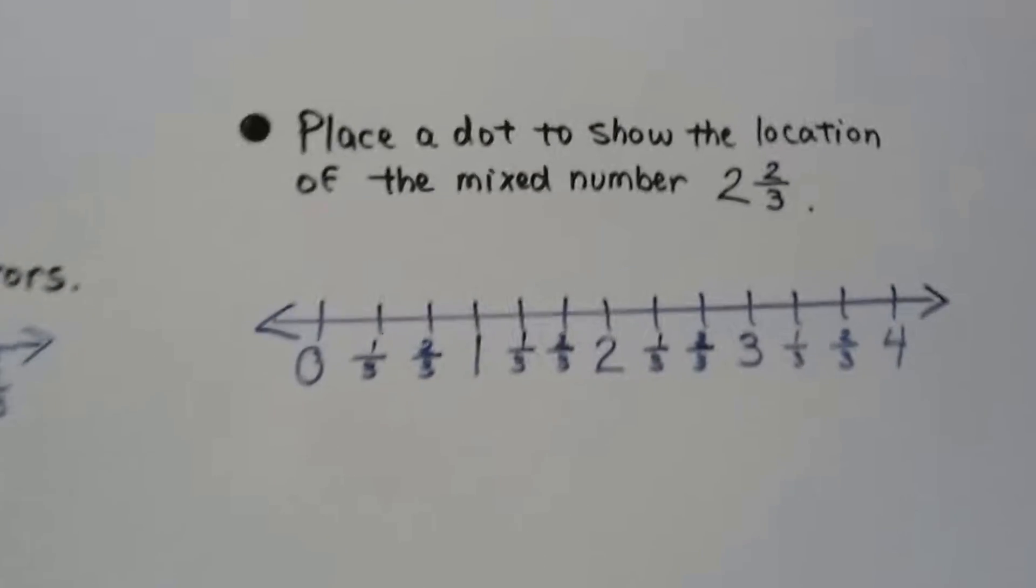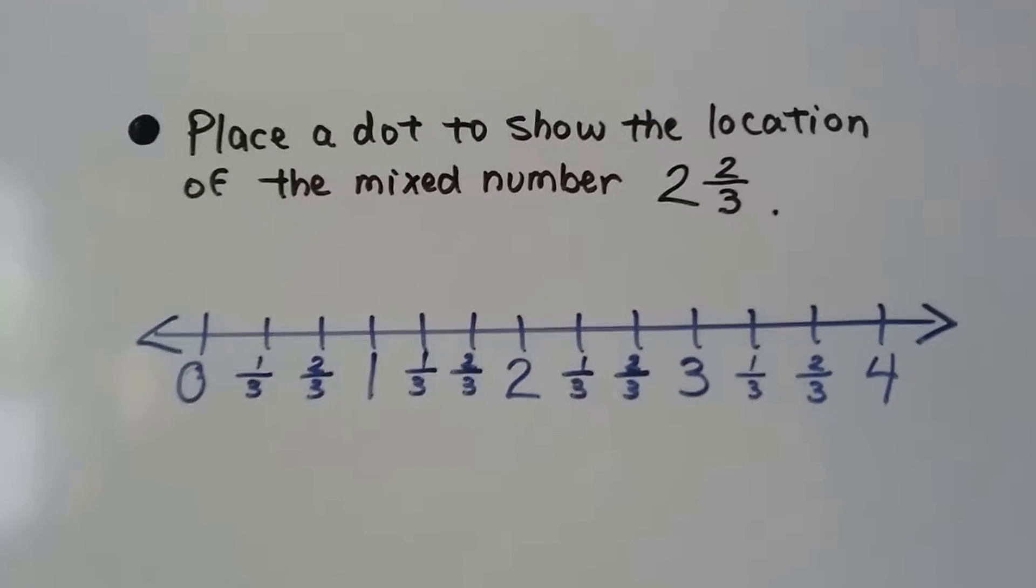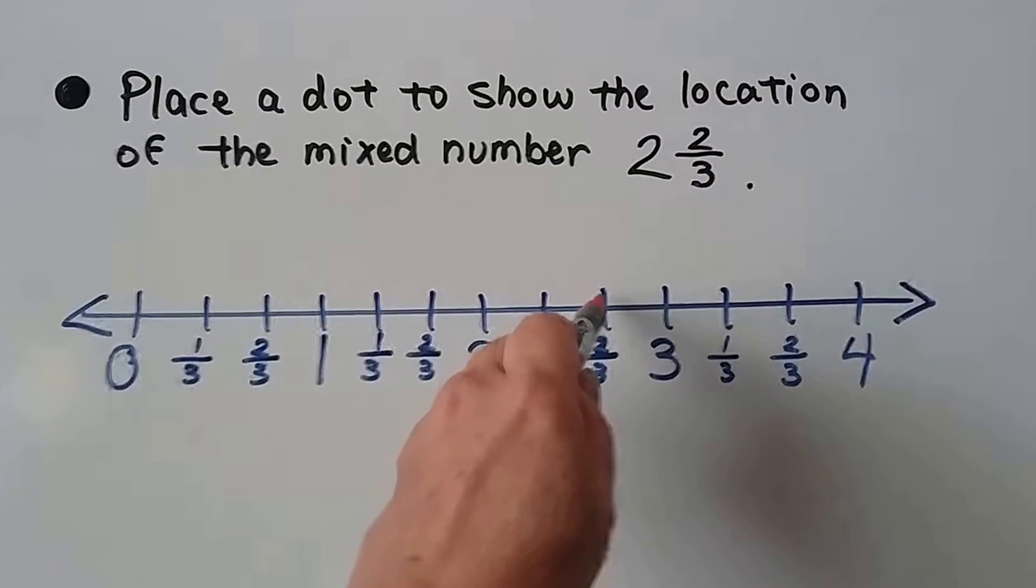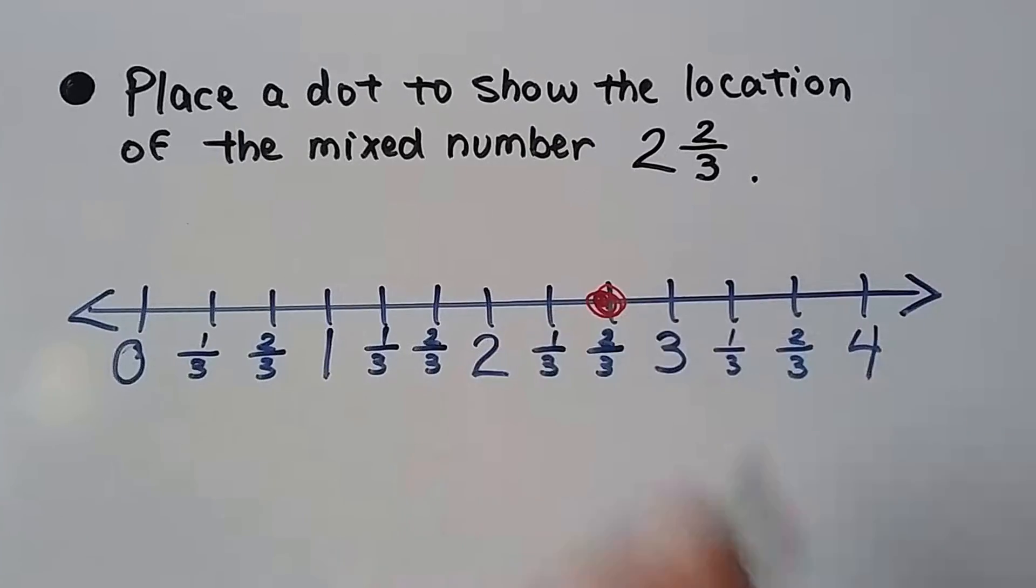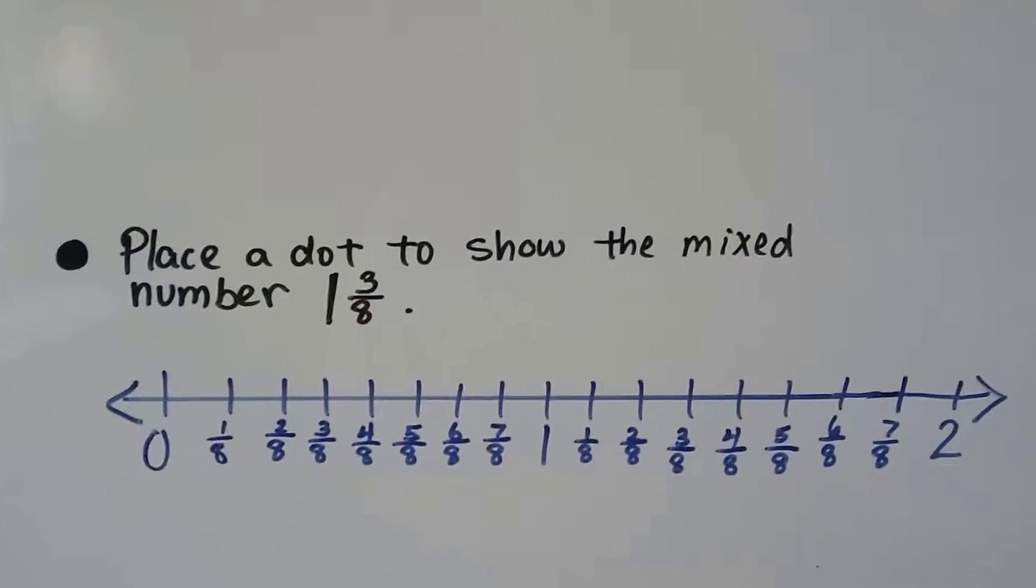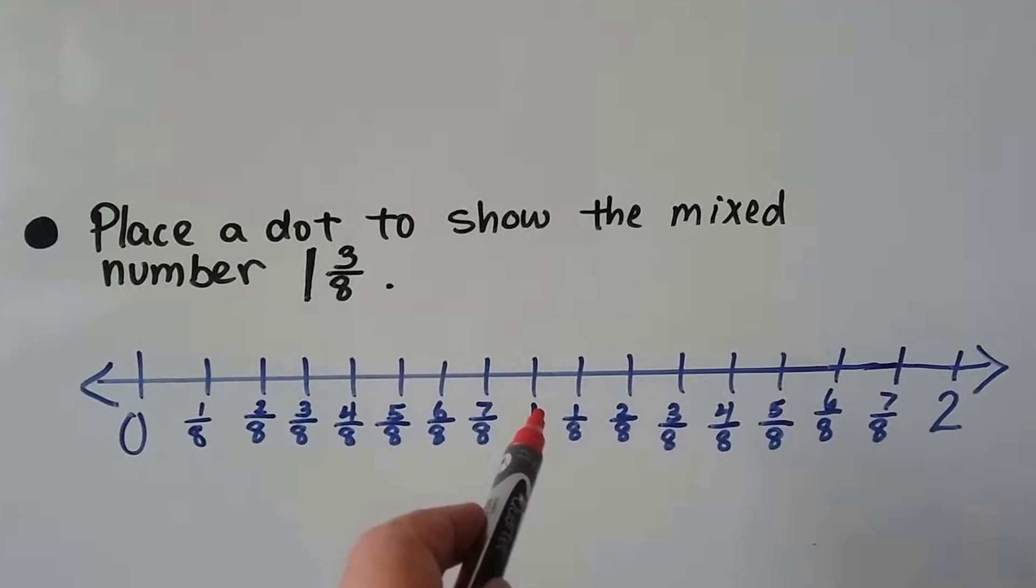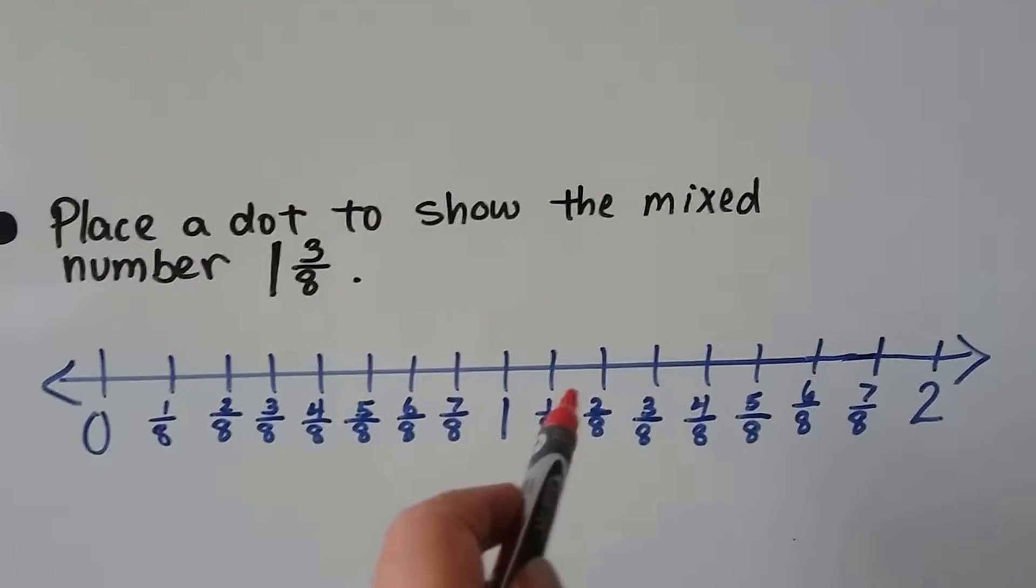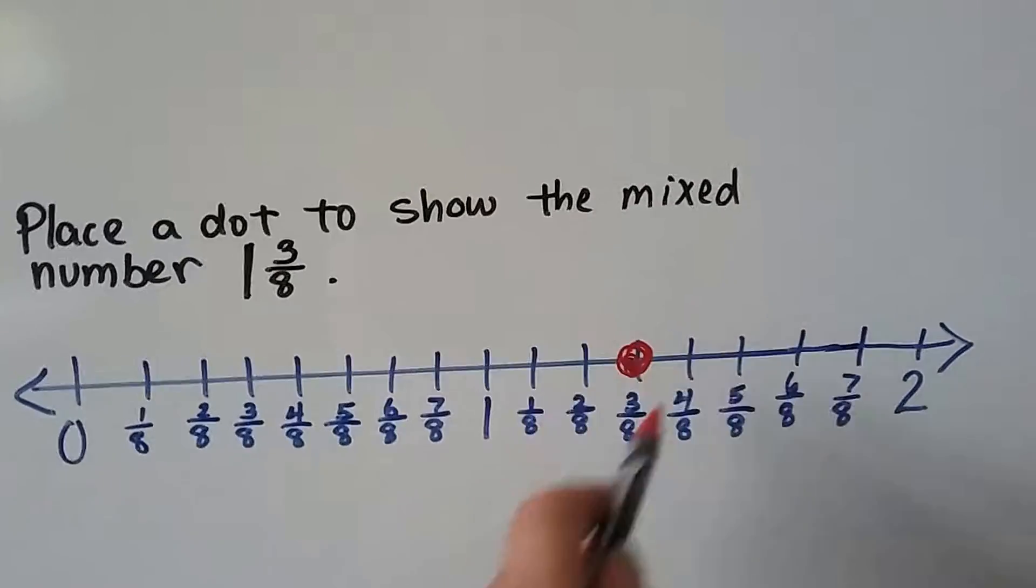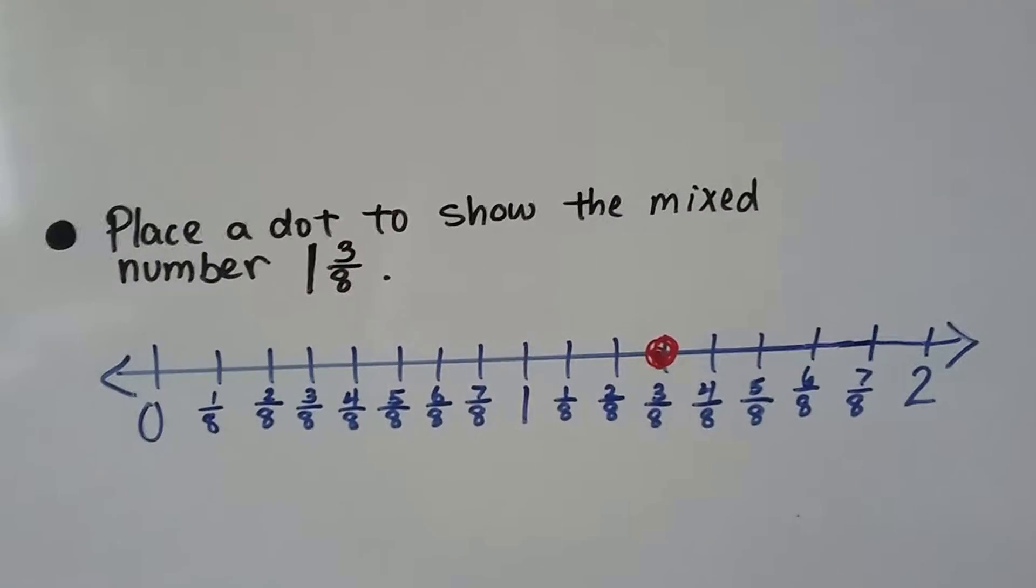This one says place a dot to show the mixed number 2 and 3 eighths. So it'd be right here, wouldn't it? 2 and 2 thirds. This one says place a dot to show the mixed number 1 and 3 eighths. First thing we do is we locate the whole number 1, and then we locate the 3 eighths. 1 eighths, 2 eighths, 3 eighths. So it'd be right here.